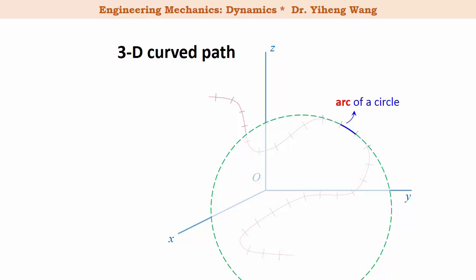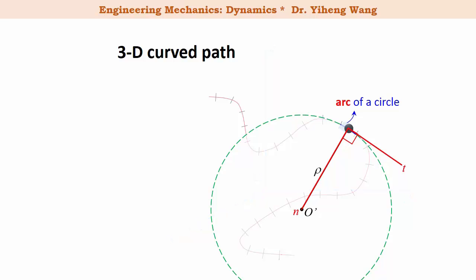A circle always has a center and a radius. For the arc of the circle, these are called the radius and center of curvature. For a particle traveling at this location, we can define a pair of axes: the t axis being tangent to the arc, and the n axis pointing towards the center of curvature, which is also normal to the arc. With these tangent and normal axes, we can represent the motion vectors using tangential and normal components instead of x, y, and z rectangular components.